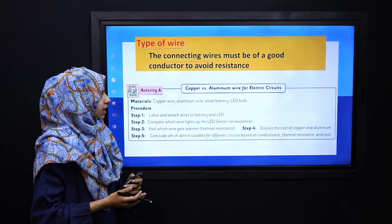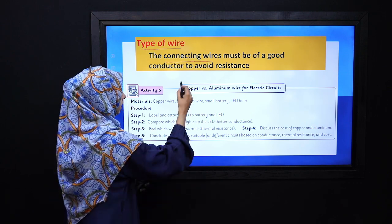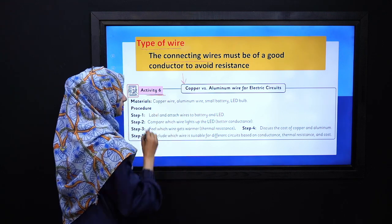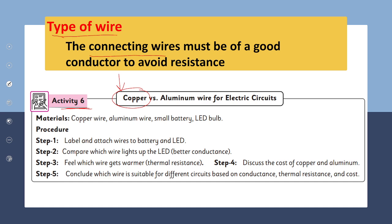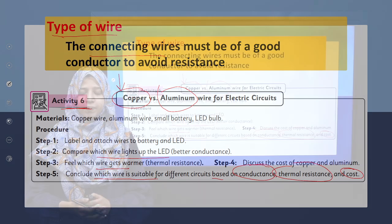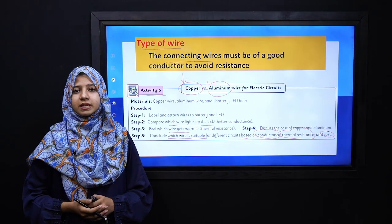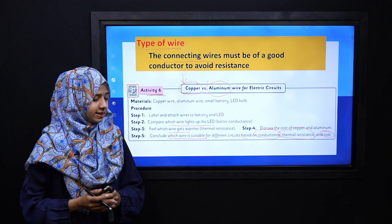But there are some wires that are bad conductors. We have Activity 6, where we have two wires. The first one is the copper wire and the second one is the aluminum wire, which we use to build electric circuits. Label and attach the wire to a battery and LED, then compare which wire is suitable for different circuits based on their conductance, their resistance, and their cost. After discussing these things, you will easily understand which wire has reduced resistance and which has better conductance.